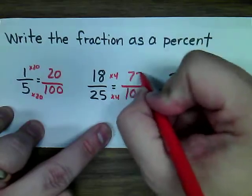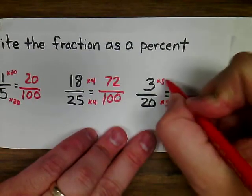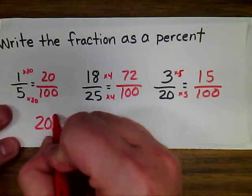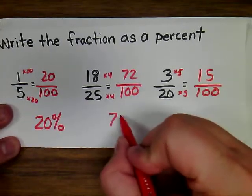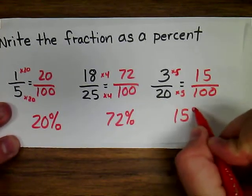and get 72 over 100. And here we'd multiply both by 5, and get 15 over 100. So, 20 over 100 would be 20%. 72 over 100, 72%, and 15 over 100, 15%.